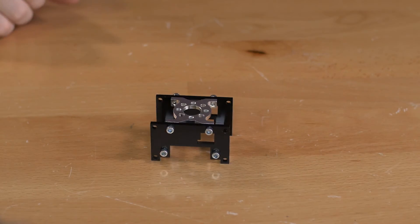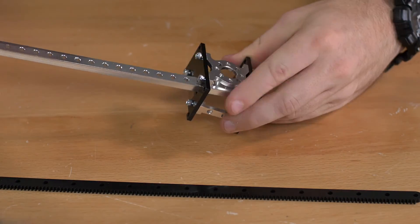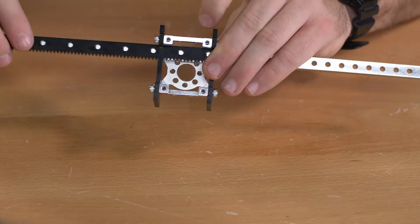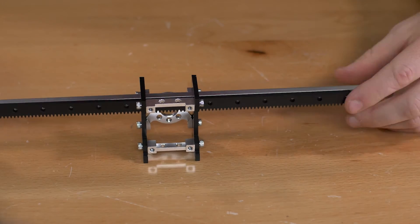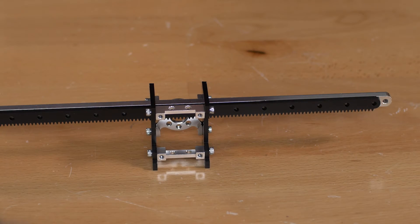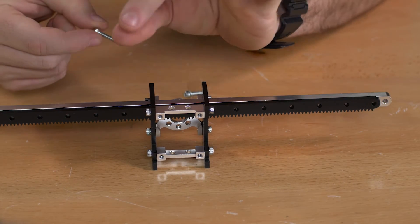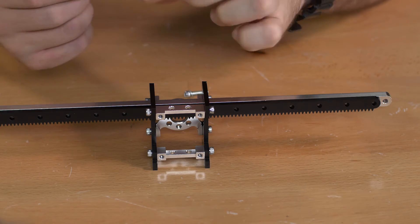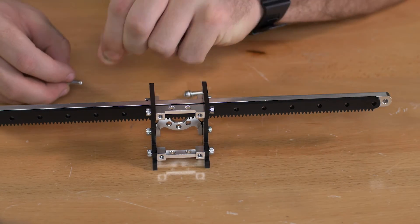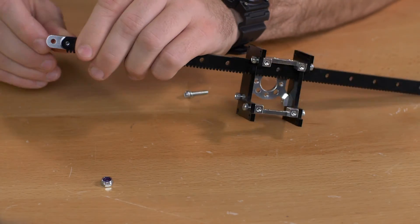Once you have that together you're going to slide in the aluminum beam and the plastic beam. Then you will use a 5 8 inch socket head screw and a number 6 washer along with a lock nut, and you'll combine the two beams on either side.